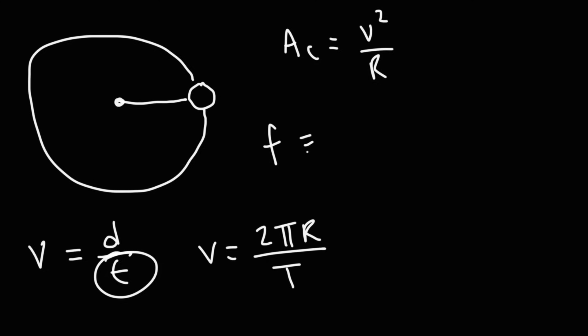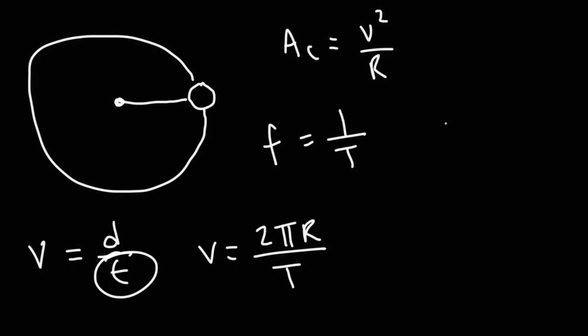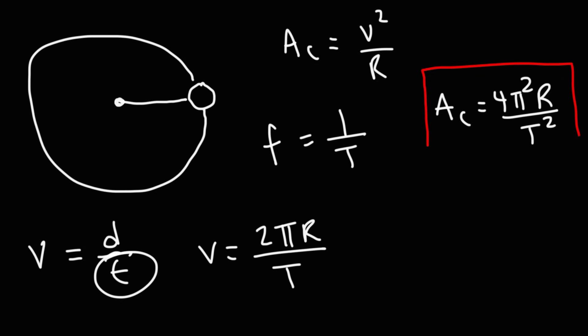The frequency is 1 over the period. If we take the velocity equation v = 2πr/T and plug it into the centripetal acceleration formula, we get that the centripetal acceleration is 4π²r over T squared. You can use this formula to calculate centripetal acceleration if you know the radius of the circle and the period of the object in circular motion.